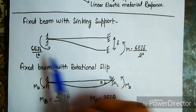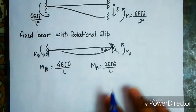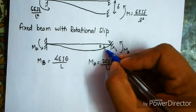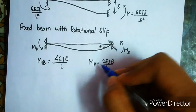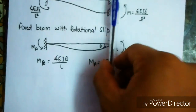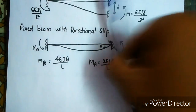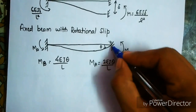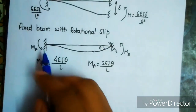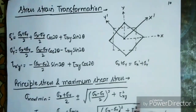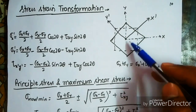For a fixed beam with a sinking support (settlement delta), the moment equals 6EI-delta upon L-squared, with one end anticlockwise and the other clockwise. For a fixed beam with rotational slip theta, the moment at the end of rotation is 4EI-theta upon L and at the other end is 2EI-theta upon L.